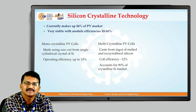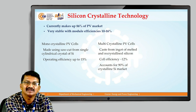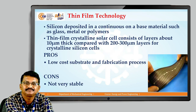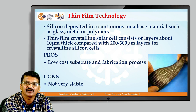Silicon crystalline technology currently makes up about 86% of the PV market. It is very stable with module efficiency of about 10 to 16%. Monocrystalline PV cells are made using saw-cut slices from a single crystalline crystal of silicon, with an operating efficiency of about 15%. Multi-crystalline PV cells are cast from ingots of melted and re-crystallized silicon, with a cell efficiency of about 12% — less than monocrystalline. Multi-crystalline PV cells account for about 90% of the crystalline silicon market. Thin-film silicon is deposited continuously on a base material such as glass, metal, or polymers. Thin-film crystalline solar cells consist of layers about 10 microns thick, compared with the 200–300 micron layer for a crystalline silicon cell.